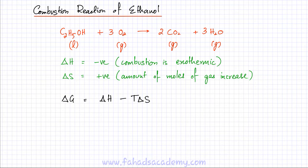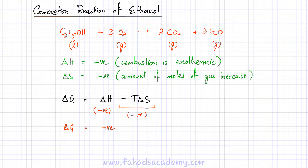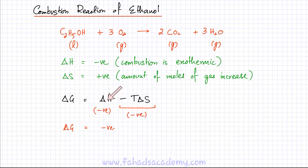For this ethanol combustion reaction, enthalpy is negative (exothermic) and delta S is positive, which makes the T delta S term negative when subtracted. So both terms are negative. When both terms are negative, delta G — the net amount of energy freely available for mechanical work — is also negative. This means the system has an excess of energy, producing both heat and a net output of work. Since delta G is negative, this reaction would tend to be spontaneous — it doesn't need any external work or heat.